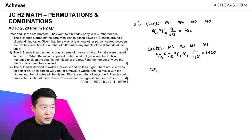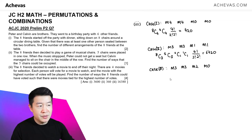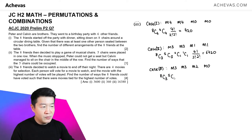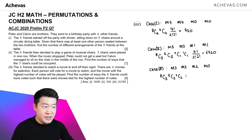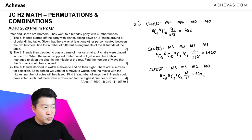Case 3: one movie gets 3 votes, another gets 3 votes, another gets 2 votes, and the last gets 0 votes. Out of 8, choose 3; from the remaining 5, choose 3; then 2 choose 2. For the arrangement across all 4 movies, it is 4! divided by 2! for the two identical 3-vote movies. This also gives 7,200.